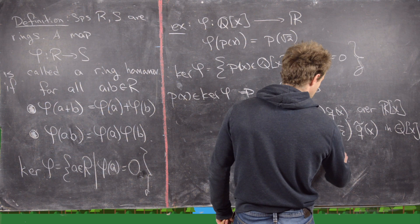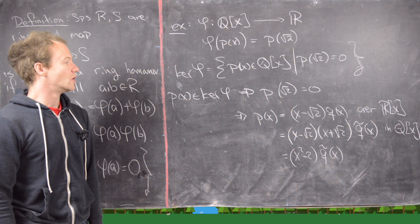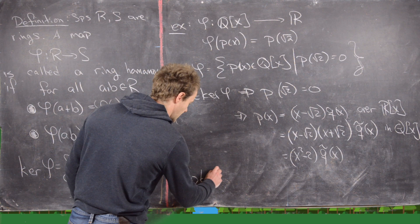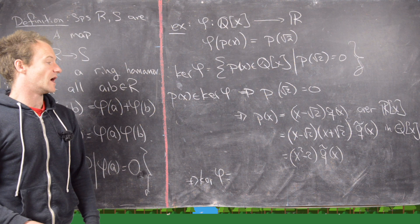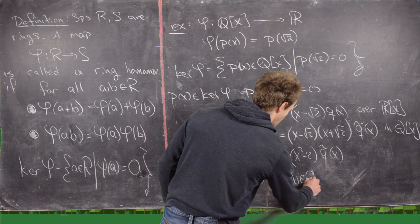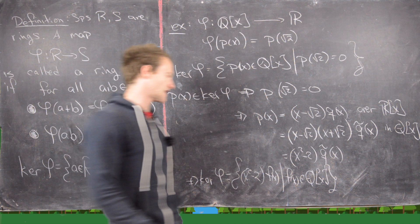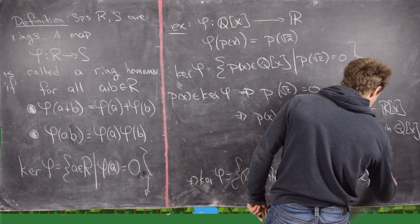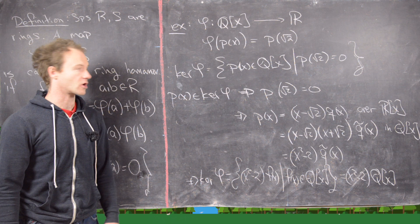So the kernel of φ in this case is all multiples of X² − 2. We can write that as (X² − 2)·Q[X], meaning all polynomials of the form (X² − 2)·F(X) where F(X) runs through all elements of Q[X]. That is our kernel for this homomorphism.